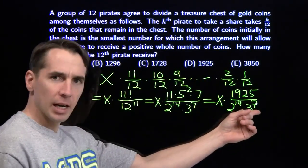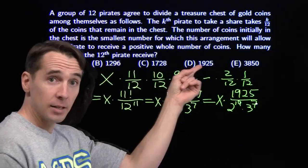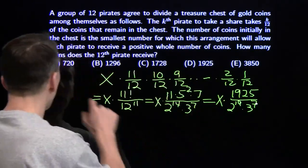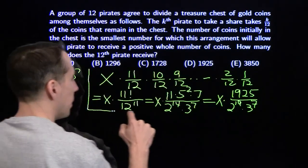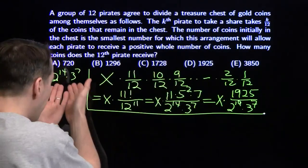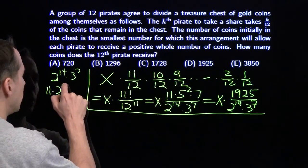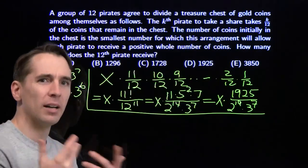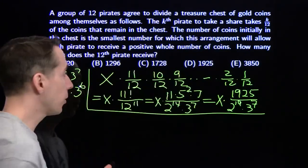If we start with 2 to the 14th times 3 to the 7th coins, we want to confirm we end up with 1925 at the end and that each pirate gets a positive whole number. Starting with 2^14 × 3^7 coins: the first pirate takes 1/12, which works out fine, leaving 11 × 2^12 × 3^6. We're chipping away at the powers of 2 and 3, and we just don't want to end up with a fractional number of coins.